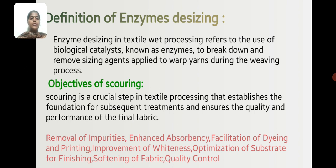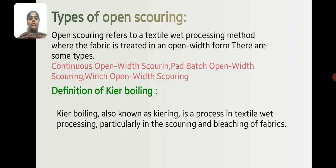Further objectives of scouring include: facilitation of dyeing and printing, improvement of whiteness, optimization of substrates for finishing, softening the fabric, and quality control. Types of Open Scouring: Continuous Open-width Scouring, Pad-Batch Open-width Scouring, and Winch Open-width Scouring.